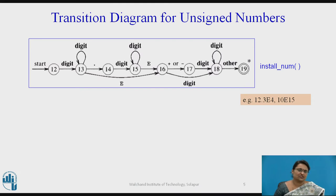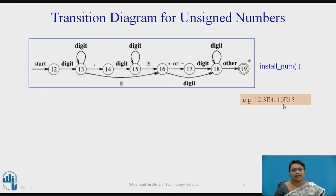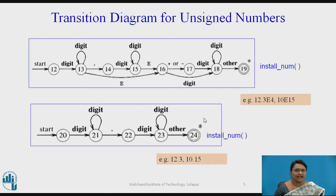The next transition diagram is used for simple unsigned numbers with fractional and exponential values. Examples include 12.3e4 or 10e15 — these are the values this particular transition diagram accepts. The next transition diagram is only for fractional numbers; for example, 12.3 is accepted as digits 1, 3, a point, then 3, and finally for 'other' it reaches the accepting state.